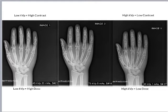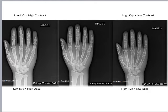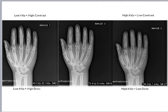A low KVP equals high contrast — specifically high subject contrast — because in a digital age, image contrast is largely controlled by the monitor or window level and brightness settings that the technologist can post-process. But in terms of subject contrast, the remnant beam exiting the patient incident on the image receptor, a low KVP equals a high subject contrast.